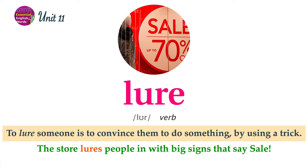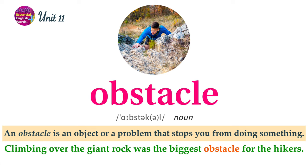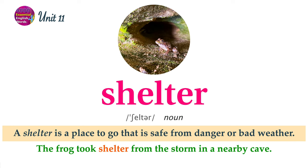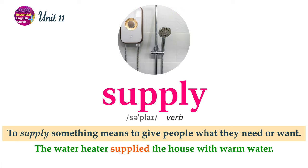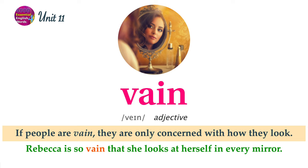An impact is the effect someone or something has on another. My grandmother had a great impact on my life. To lure someone is to convince them to do something by using a trick. The store lures people in with big signs that say SALE. An obstacle is an object or a problem that stops you from doing something. Climbing over the giant rock was the biggest obstacle for the hikers. A shelter is a place to go that is safe from danger or bad weather. The frog took shelter from the storm in a nearby cave. To sort means to separate things into different groups or classes. He sorted his clothes by colors and sizes. To supply something means to give people what they need or want. The water heater supplied the house with warm water. If people are vain, they are only concerned with how they look. Rebecca is so vain that she looks at herself in every mirror.